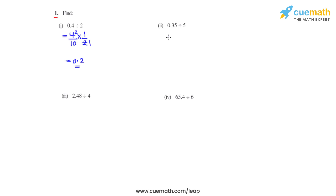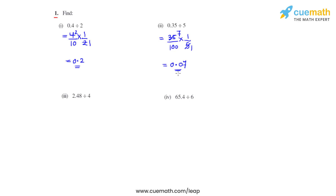Coming to the second bit, we have 0.35 which can be written as 35 over 100. The division can be written as the product of two numbers where we write the first number as it is and the second number becomes the reciprocal. The reciprocal of 5 is 1 over 5. Now 5 ones are 5 and 5 sevens are 35, so 7 divided by 100 gives us 0.07 as the answer for the second bit.